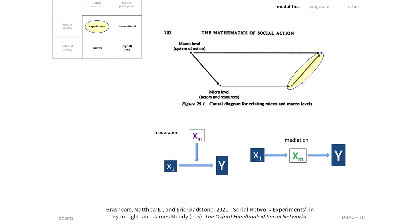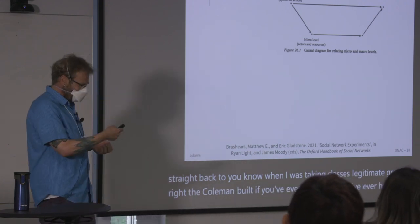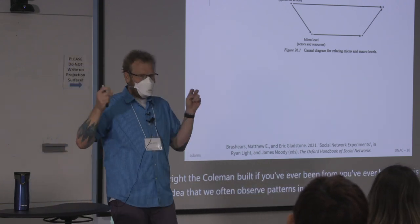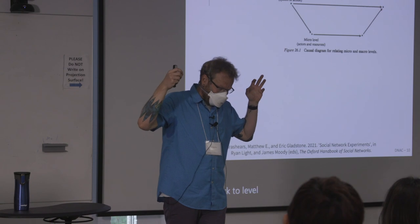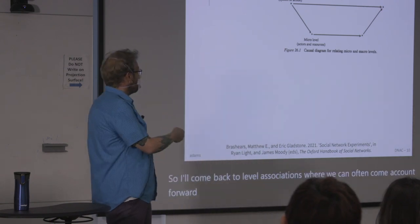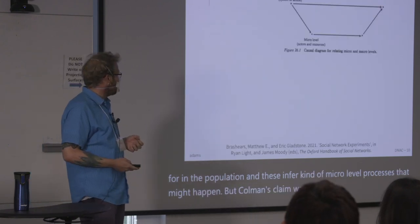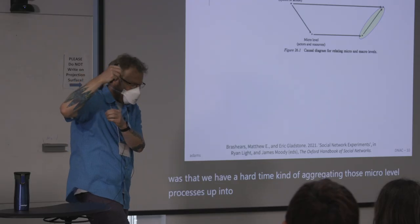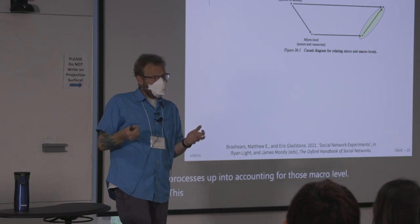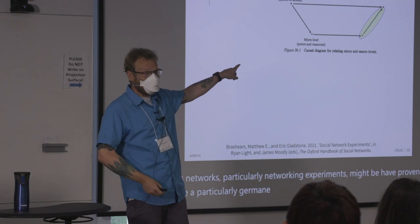Going back to when I was taking classes with Jim in grad school — the Coleman boat idea: we often observe macro-level patterns and infer micro-level processes that might explain them. But Coleman's claim was that we have a hard time aggregating those micro-level processes up to account for those macro-level patterns. Networks, and particularly network experiments, might have proven to be a germane opportunity to do this in ways Coleman said was a problem. And I think experiments allow us to do this a bit more effectively.